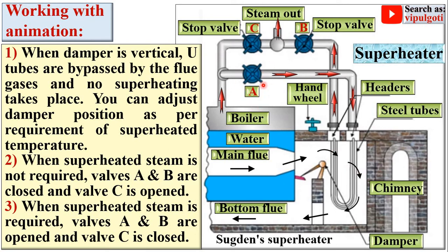When superheated steam is not required, valves A and B are closed and only valve C is open. In this case, steam is taken from the superheater outlet but it is wet steam coming directly from the boiler, without passing through the U-tubes, so it remains in the form of wet steam.